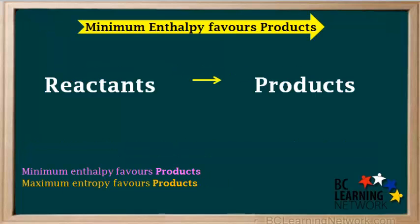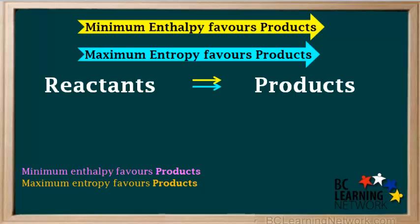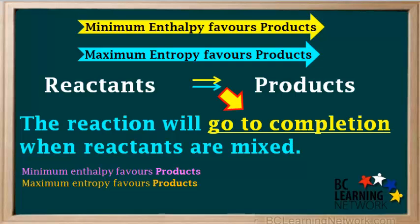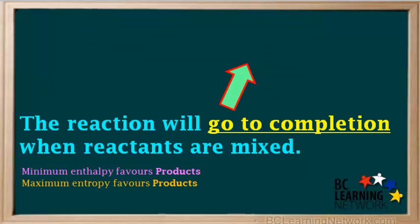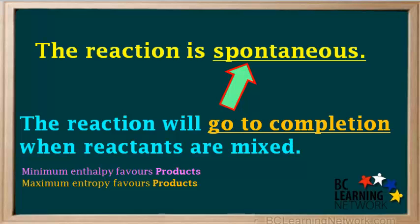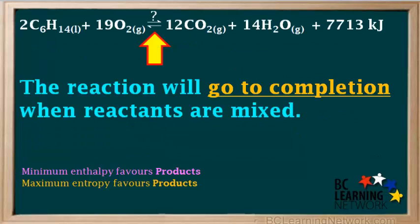Remember, in cases where minimum enthalpy favors products and maximum entropy also favors products, the reaction will go to completion when reactants are mixed — assuming the reactants have sufficient kinetic energy to overcome the activation energy barrier. In a combustion reaction like this one, it means we must ignite the fuel. Whenever a reaction goes to completion it is spontaneous, so we replace the double equilibrium arrow and its question mark with a single arrow pointing toward the products.